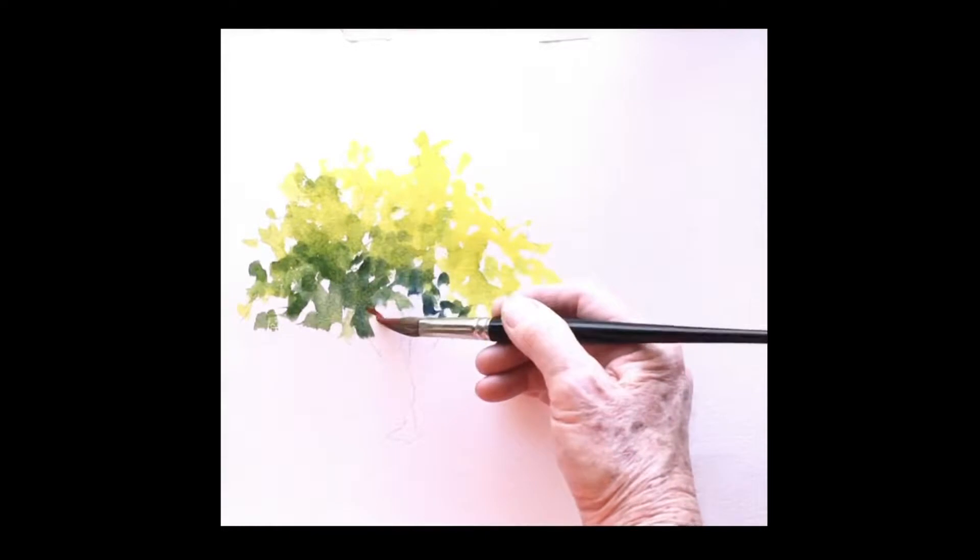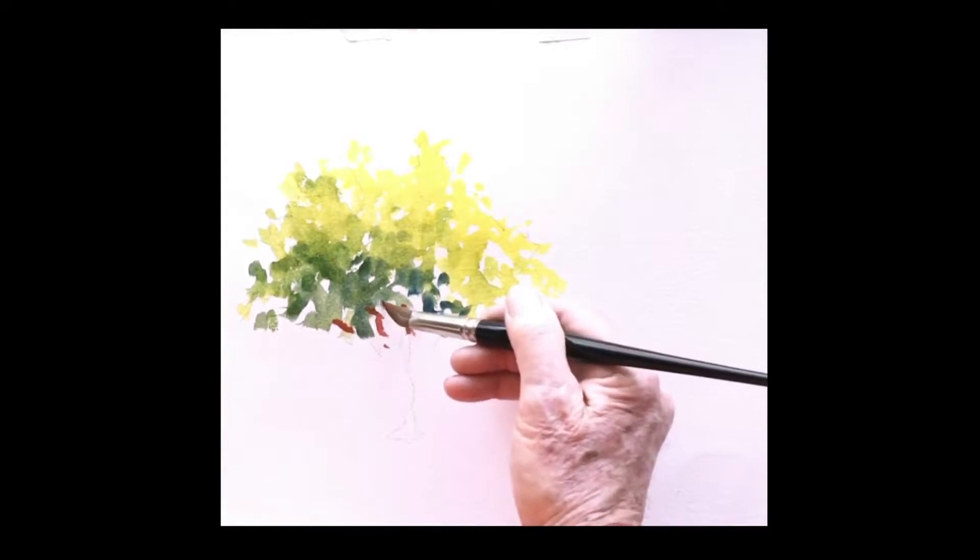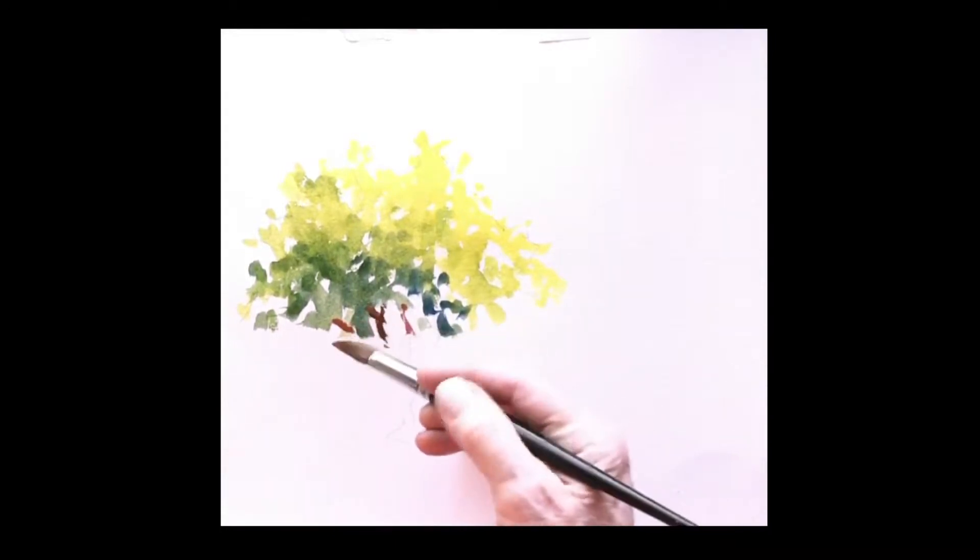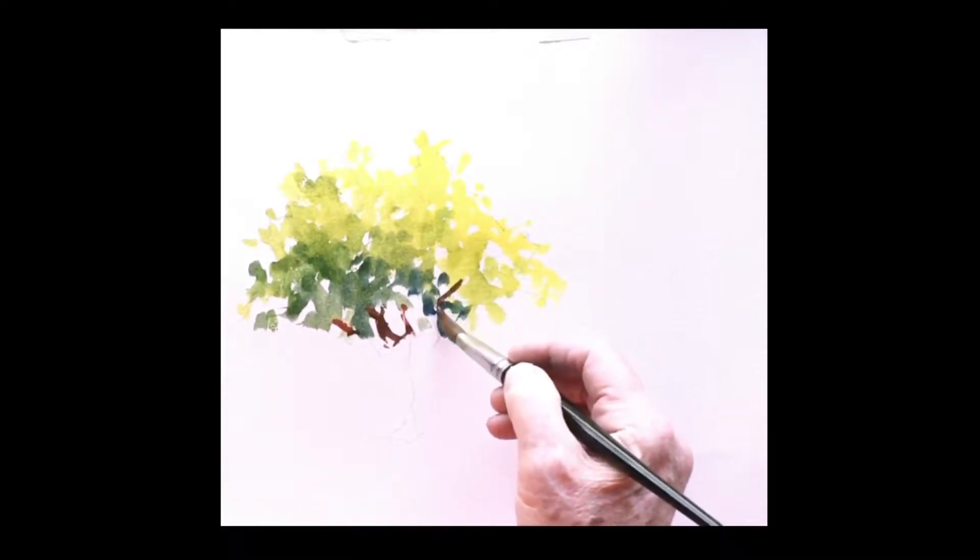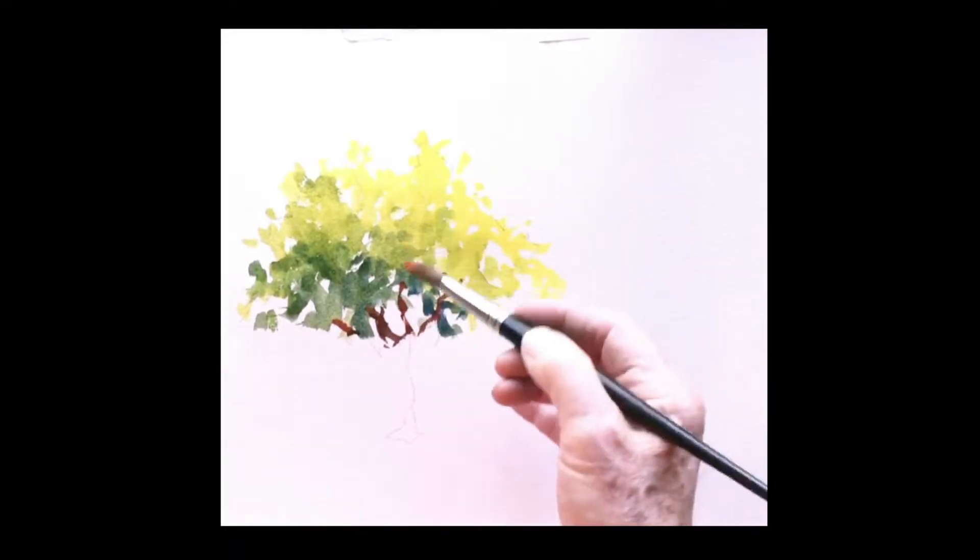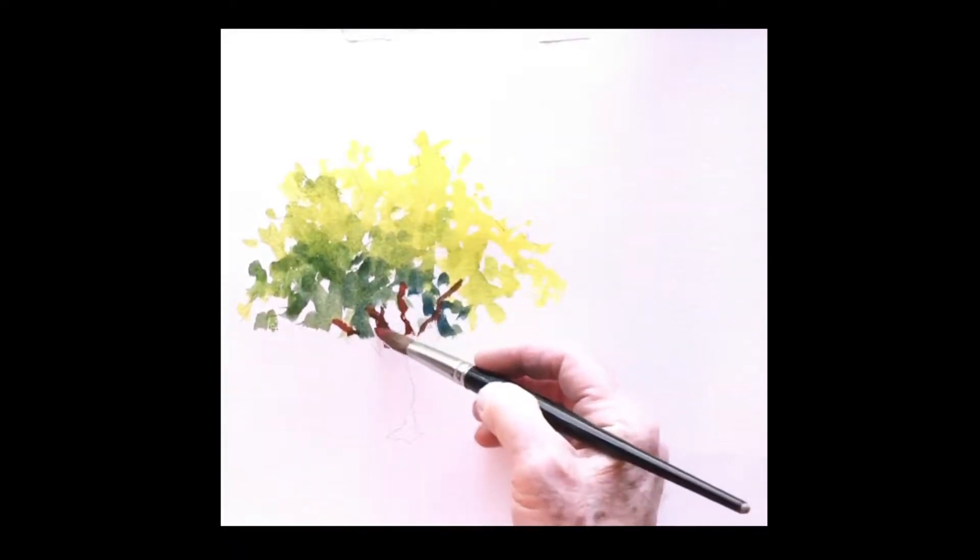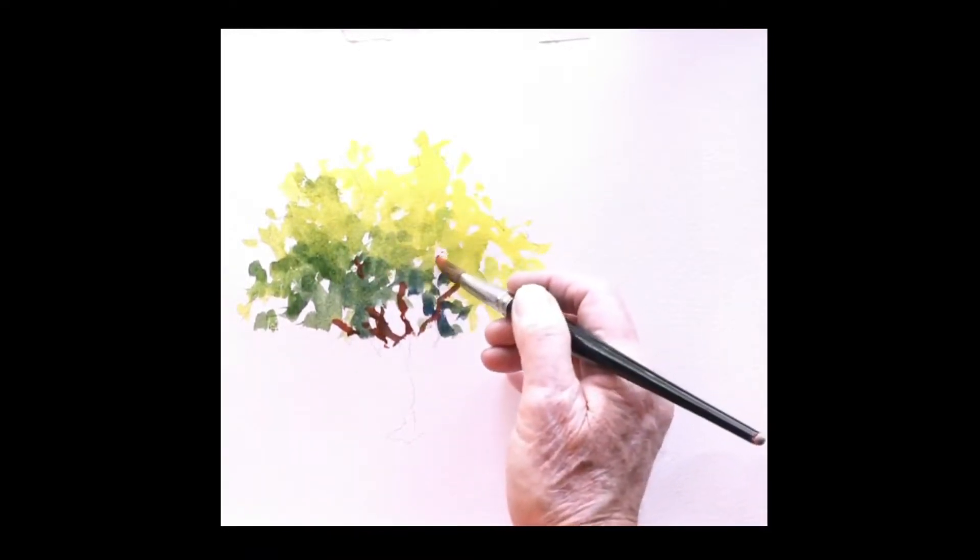And then I'm going to come in here, make some interesting branch shapes. I think I'm going to make them even a little bit darker because they are in the shade of the foliage. Let that branch mix in, even directly with the greens that are on the paper. And then we'll have a little bit here and a little bit there.